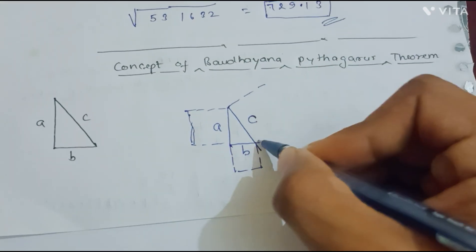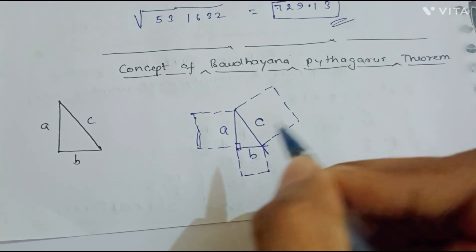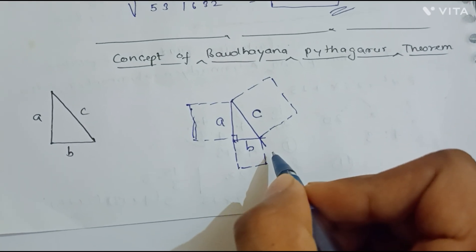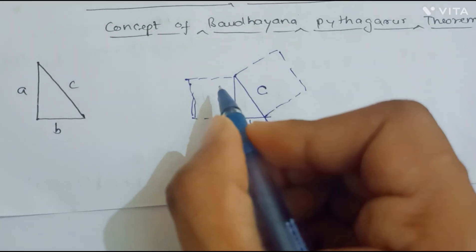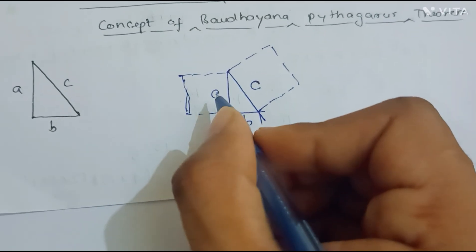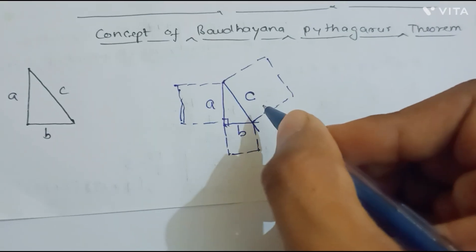If this is 90 degrees, so this will be hypotenuse. So we will make a square from the base b, and if we will make a square from one of the sides that is perpendicular with side a, then the third side which will make a square...